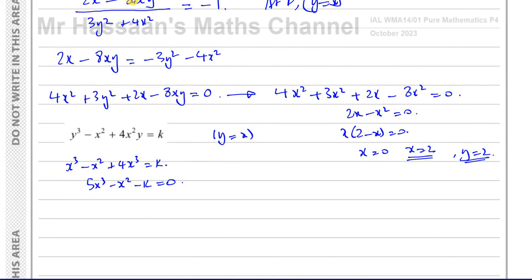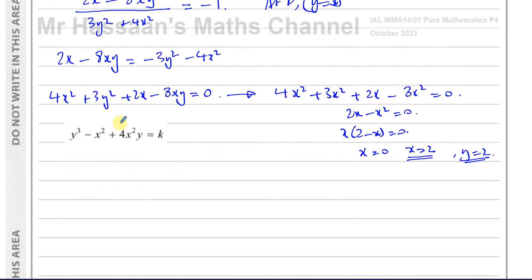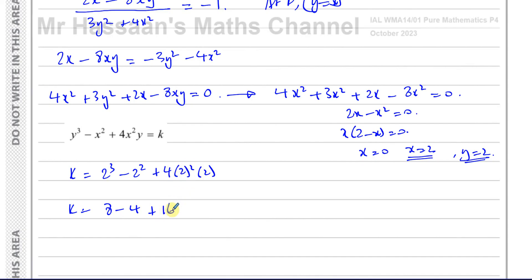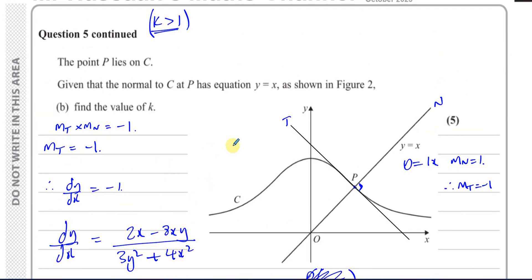With x = 2 and y = 2, we substitute into the curve equation y³ - x² + 4x²y = k: k = 2³ - 2² + 4(2²)(2) = 8 - 4 + 4(4)(2) = 8 - 4 + 32 = 36. So k = 36.